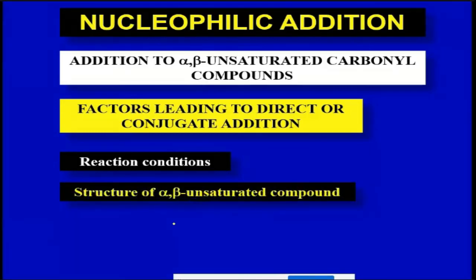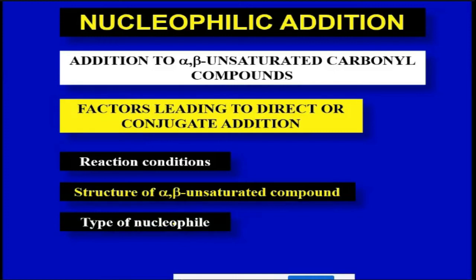The structure of the alpha-beta unsaturated compound is a new factor that affects whether direct addition or conjugate addition occurs. Additionally, the type of nucleophile being used has an important effect. Depending on which nucleophile you use, it may favor direct addition or conjugate addition. So the nature of the nucleophile affects which of the two reactions takes place.